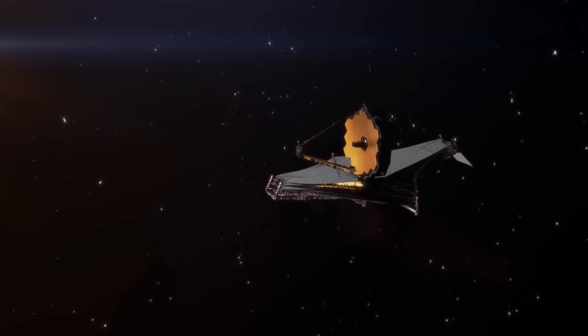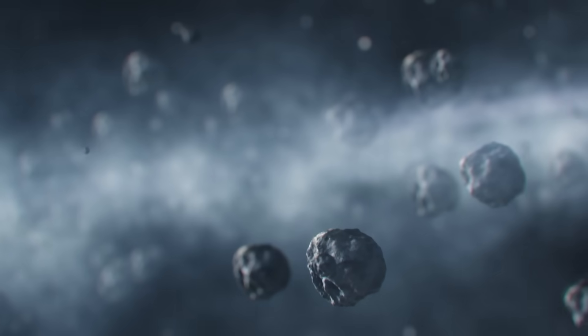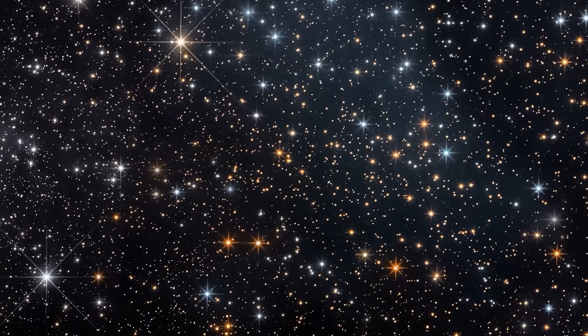Webb's first glimpses of 3I Atlas confirmed what many feared. Its surface was smooth, reflective, and geometric in ways that defied natural formation. Instead of tumbling chaotically through space, it rotated with a steady rhythm, as though stabilized by an internal mechanism. Natural objects don't fly like this. Machines do.